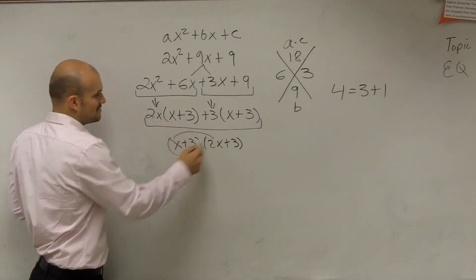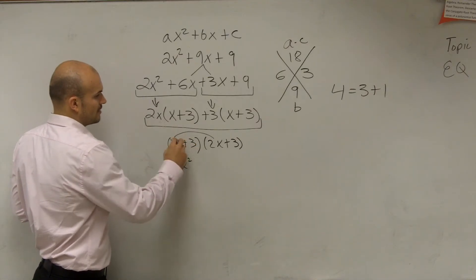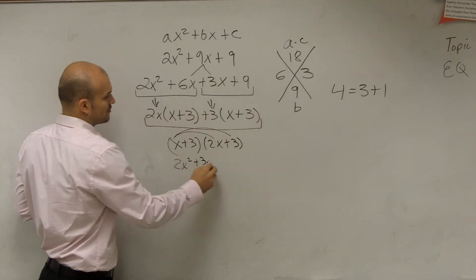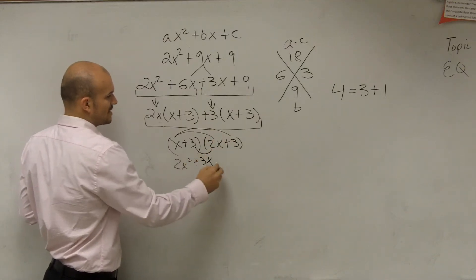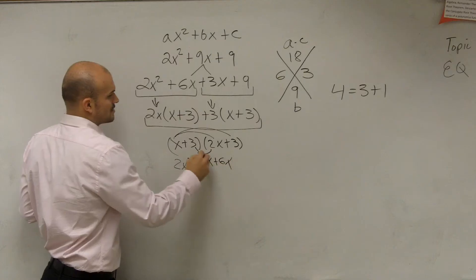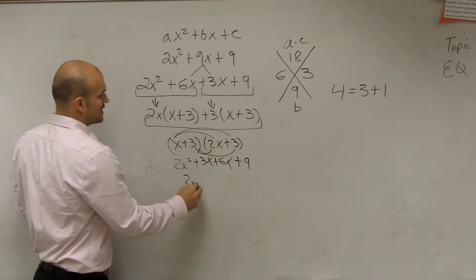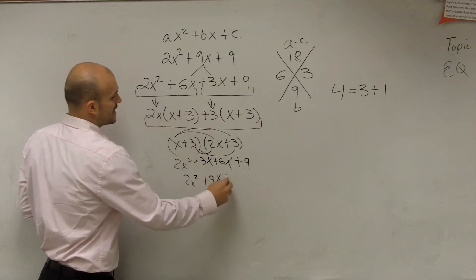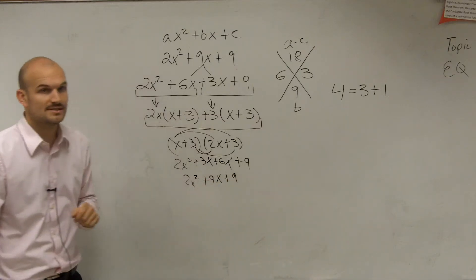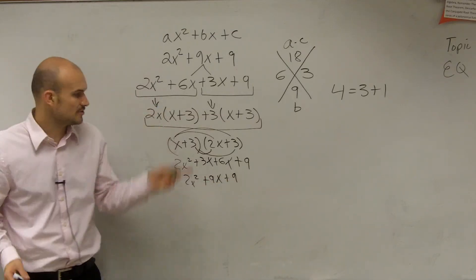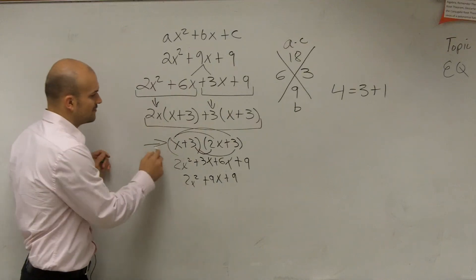So X times 2X is 2X squared. X times 3 is 3X. 3 times 2X is positive 6X. 3 times 3 is positive 9. 2X squared plus 9X plus 9. Is that our original answer? Yes. So we factored it correctly as here is your factored form.